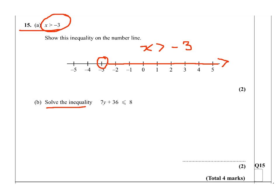The second thing we need to do is to solve this equation. So the first step is I will take 36 on both sides. So I will have 7y plus 36 minus 36, which is less or equal to 8, take away 36.